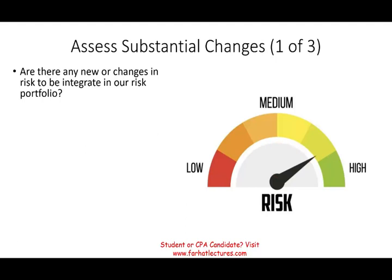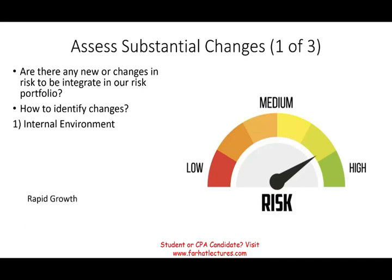Are there any new changes or changes in risk to be integrated in our risk portfolio? How often do you want to do this? Maybe when there's an event — every time there's an event, you think: let me review if that event changes my risk tolerance. So how do I identify changes? Certain events are considered internal to the environment, and some events are considered external. When those happen, you want to assess any substantial change in your risk profile.